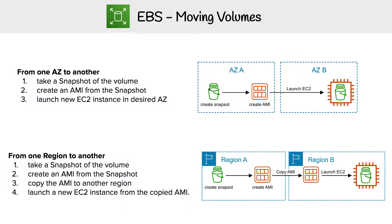Once you create that snapshot, you'd create an AMI from that snapshot. And then you could launch an EC2 instance into another availability zone.